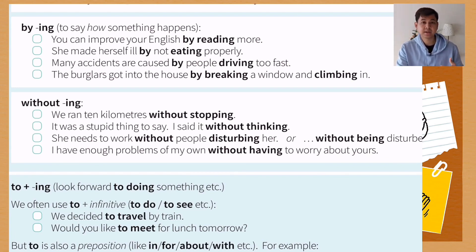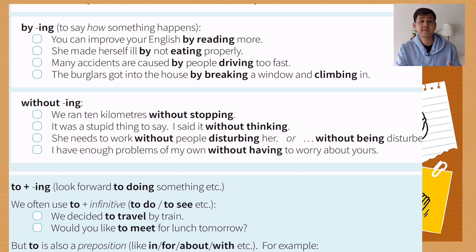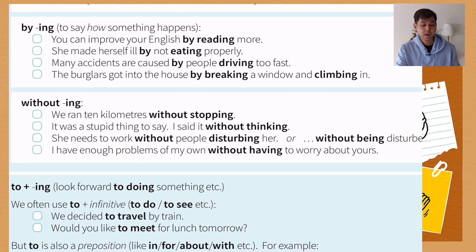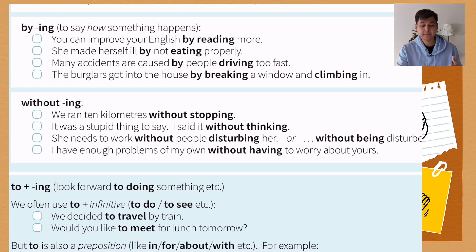For example, you can improve your English, you can improve your PTE score — how? By reading more. So 'by' tells us how something happens, and we follow it with gerund or verb -ing. 'She made herself ill' — how? By not eating properly. 'Many accidents are caused' — how? By people driving too fast on the road. 'The burglars got into the house' — how? By breaking a window and climbing in.